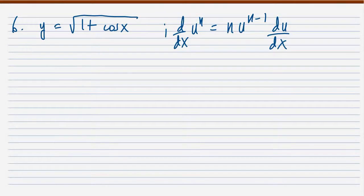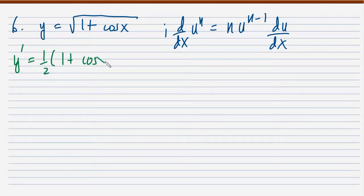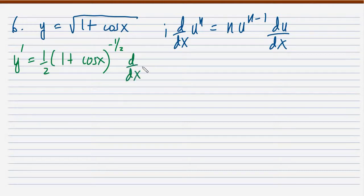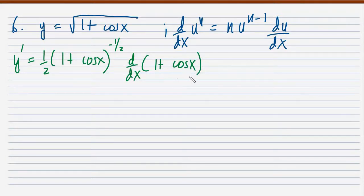Applying the general power formula: y prime is equal to 1 half times (1 plus cosine x) raised to negative 1 half — because 1 minus 1 half is negative 1 half — then multiplied by the derivative of 1 plus cosine x.